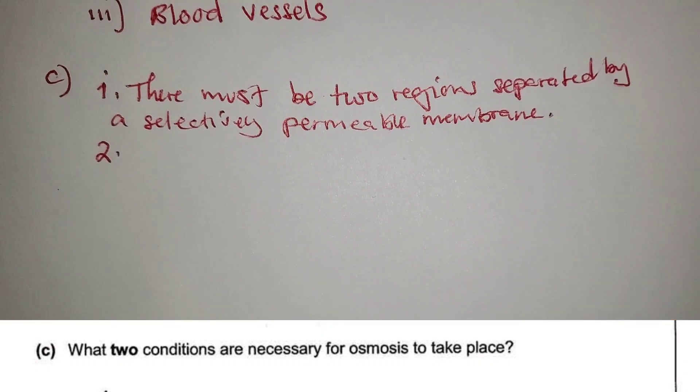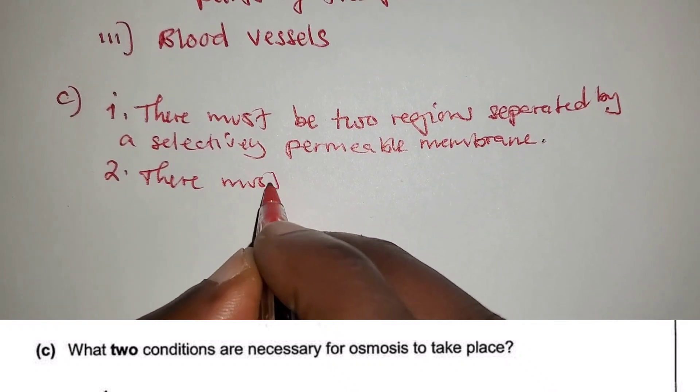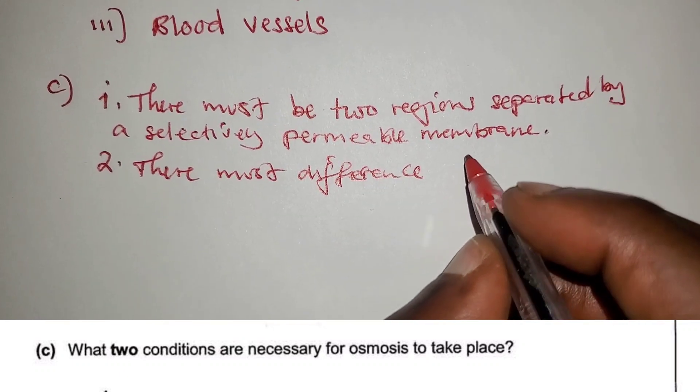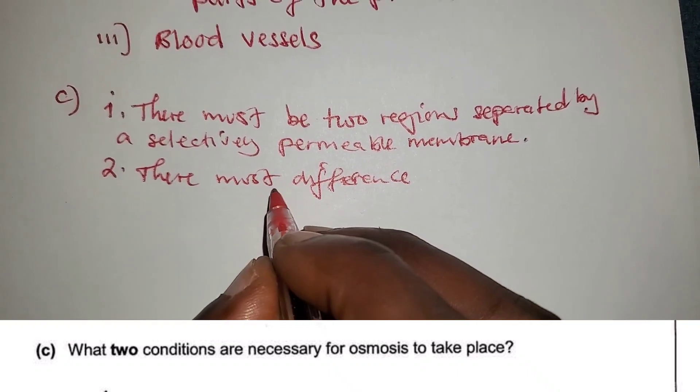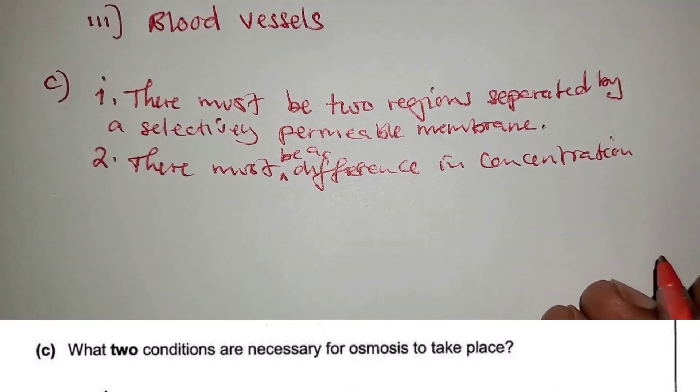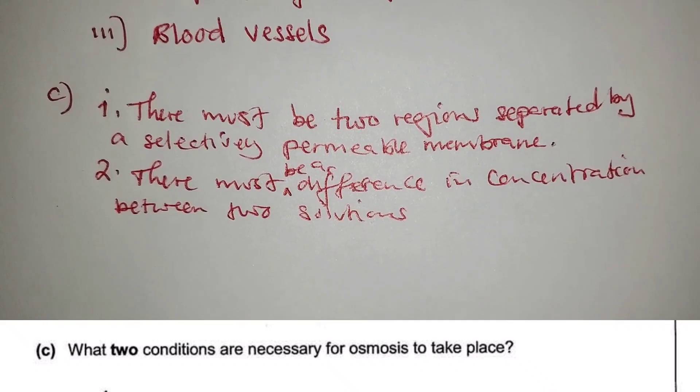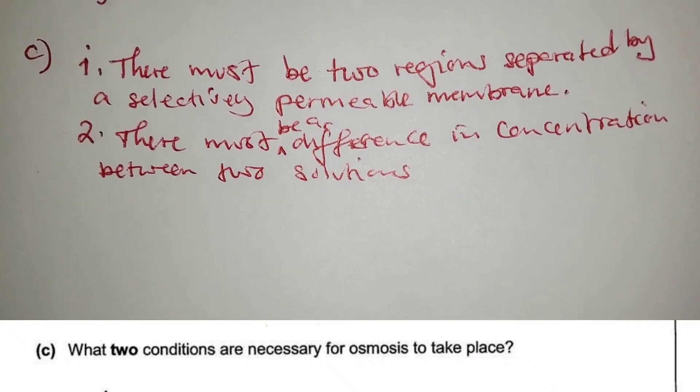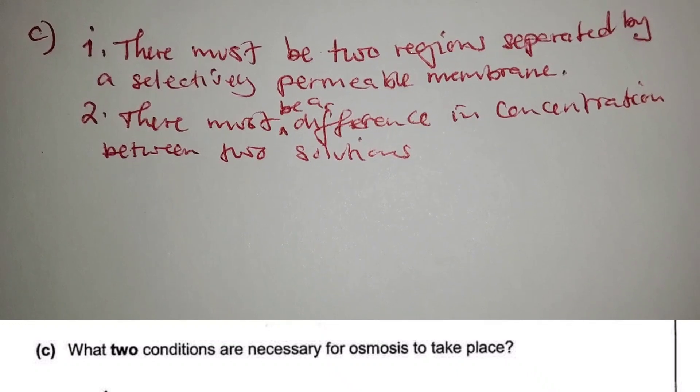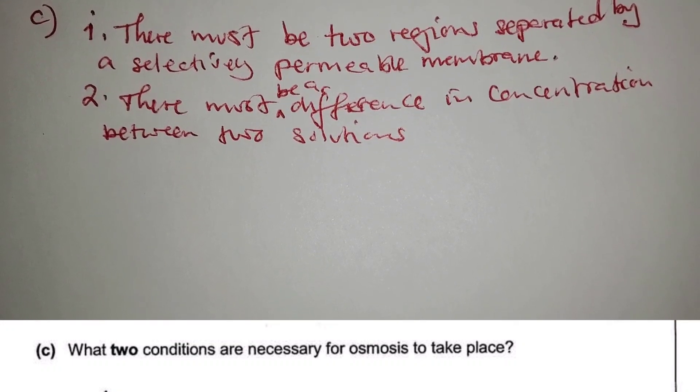Number two is that there must be a difference in concentration, there must be a difference in the concentration between two solutions. So these are the two conditions - there must be separated by a selectively permeable membrane, number two, there must be a difference in concentration between two solutions.